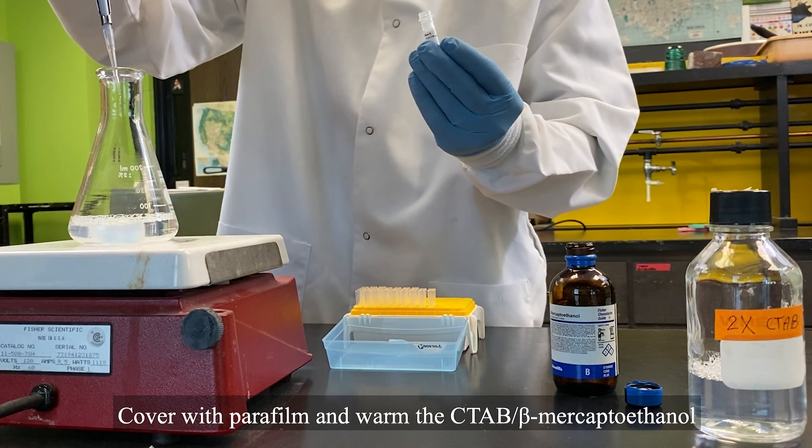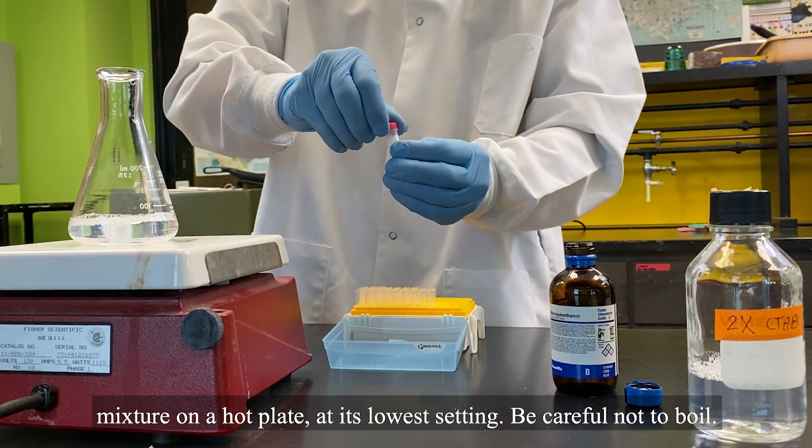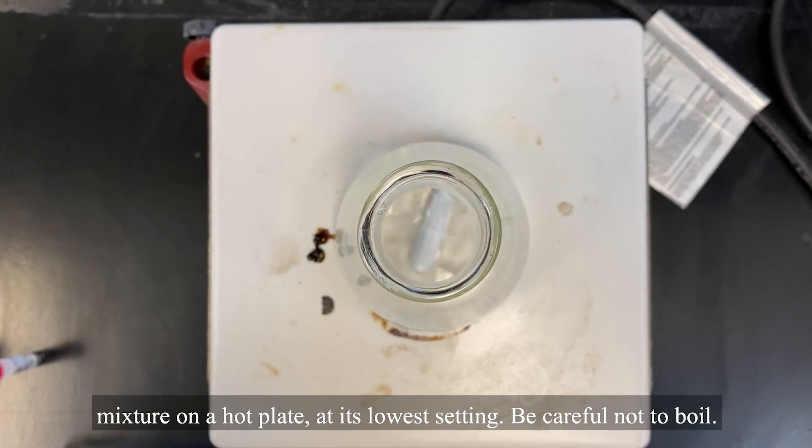Cover with parafilm and warm the CTAB beta-mercaptoethanol mixture on a hot plate at its lowest setting. Be careful not to boil.